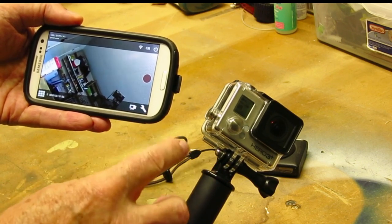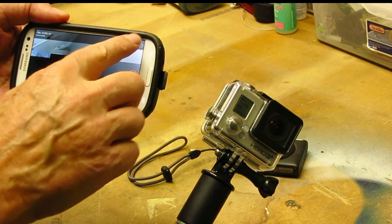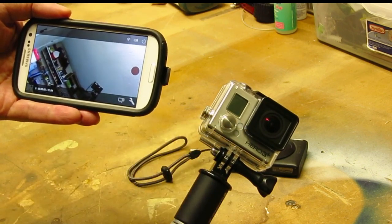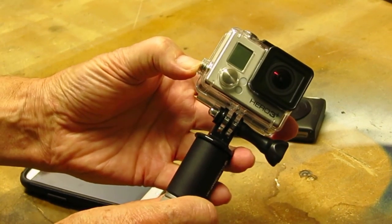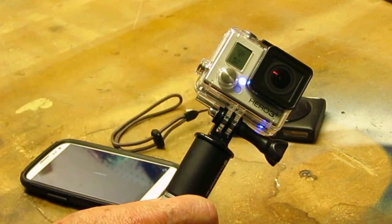Now if I want to turn the camera off from the app, I can. I'm going to turn the camera off—it says camera off. And if I want to turn the Wi-Fi on the camera off, I just hold this down, it blinks three times, and that's off.